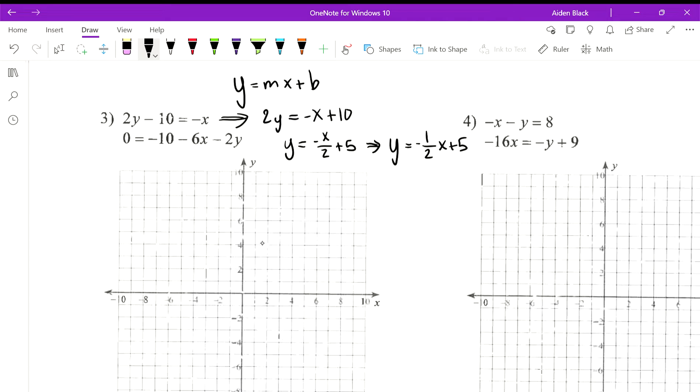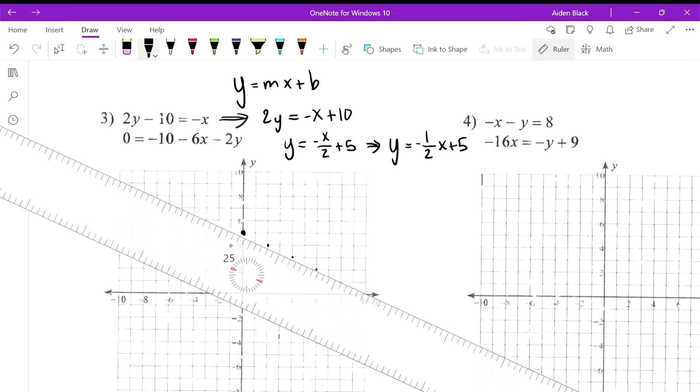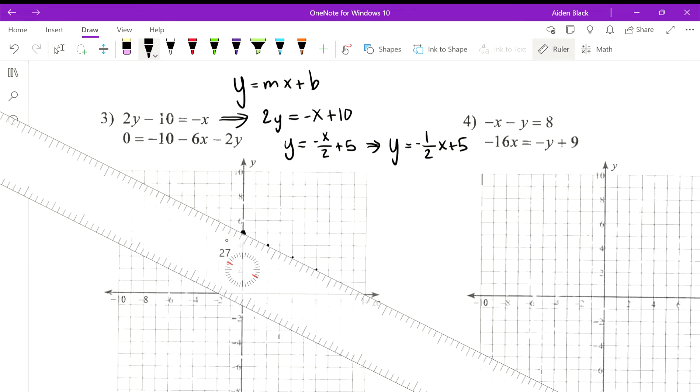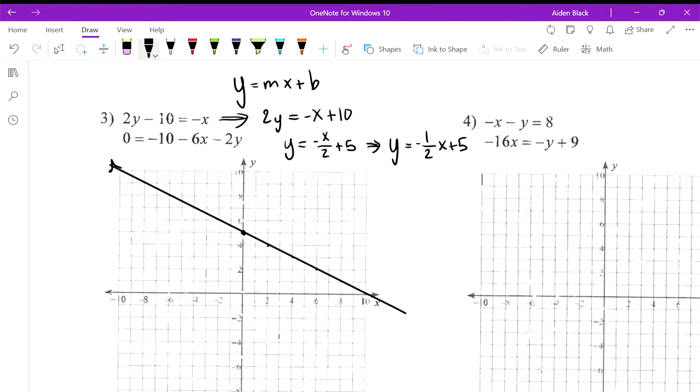Really this should be written as y equals negative one-half times x plus 5. So our y-intercept is 5, and we go down 1 over 2, down 1 over 2, down 1 over 2. Here's our line, looks like I got that lined up just right.